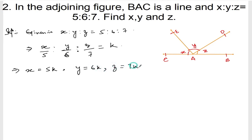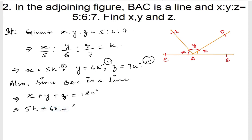Also, since BAC is a line, X plus Y plus Z is equal to 180 degrees. This is equation number two and this is equation number three. So X is 5k, Y is 6k, Z is 7k, so 5k plus 6k plus 7k is equal to 180 degrees from equation number three.